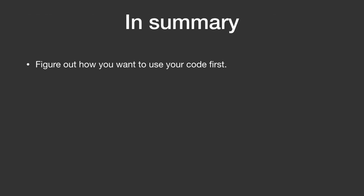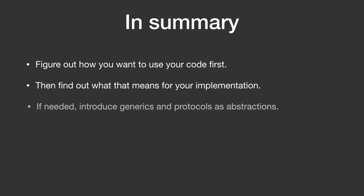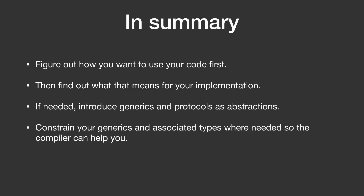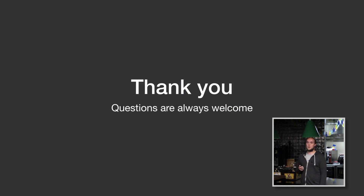In summary: first, figure out how you want to write your code — work from the outside in instead of inside out. Find out what it means for implementation. If needed, introduce generics, protocols, or other abstractions. Use constraints where needed so the compiler can help you infer everything — if you don't, you could just use any for everything and your app will probably crash a lot, because the compiler can't help you. And lastly, generics can help you limit code duplication. If you like this talk, I'll be writing a lot more on my blog — follow me on Twitter or follow Advent of Swift. Thank you, and questions are always welcome.